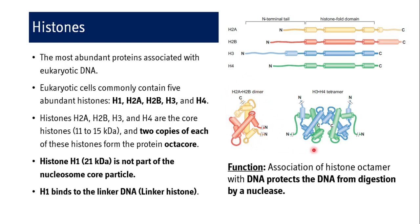The assembly of a nucleosome involves the ordered association of these building blocks. First, the H3-H4 tetramer forms and binds to DNA. Then two H2A-H2B dimers join the H3-H4-DNA complex to form the final nucleosome. The histone octamer — four chains from the tetramer plus four chains from two dimers — protects the DNA from digestion by a nuclease.